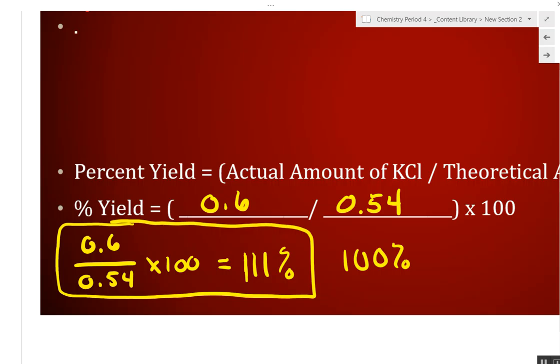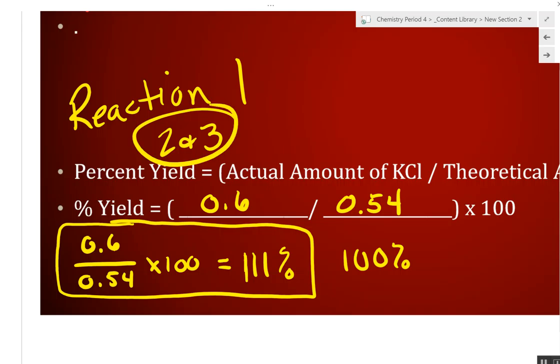So, you're 11% over where you should have been. Now, what I said to the other class, this was reaction 1. This is where you were kind of making sure you knew how to do the experiment. Reactions 2 and 3 should be better, hopefully. So, what I want you to do now is take out your lab and do all your calculations and we'll see where you're at.